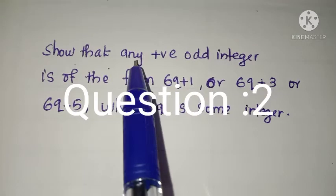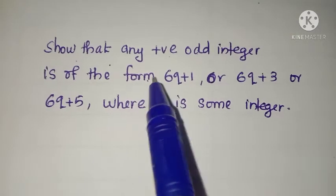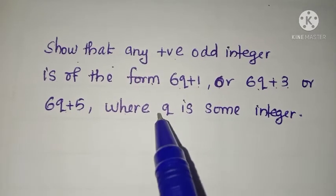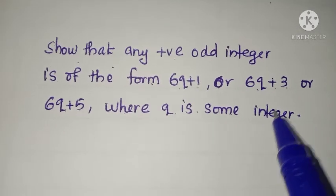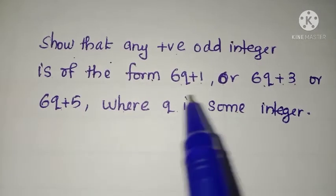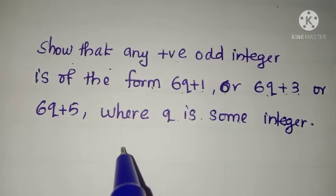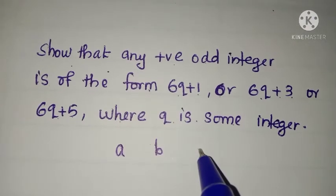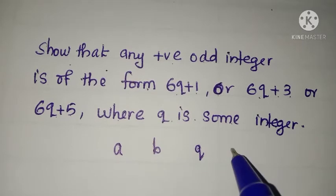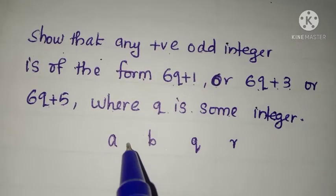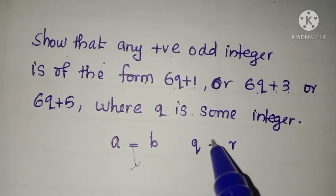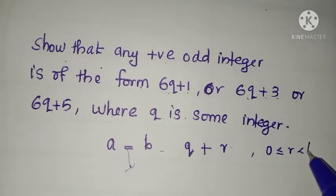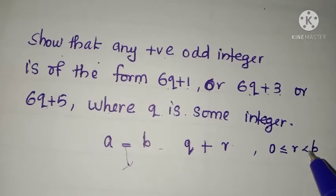Show that any positive integer is of the form 6q plus 1, or 6q plus 3, or 6q plus 5, where q is some integer. We are going to apply Euclid's division algorithm here. If A is divided by B, then we get a quotient q and a remainder R, and therefore A is written as Bq plus R, where 0 is less than or equal to R, which is less than B.